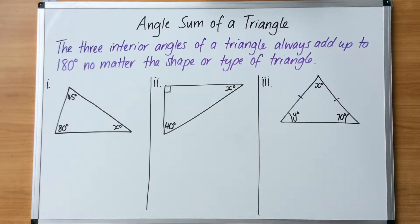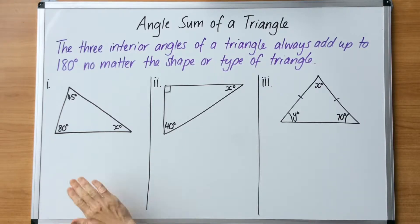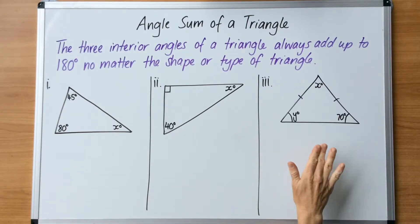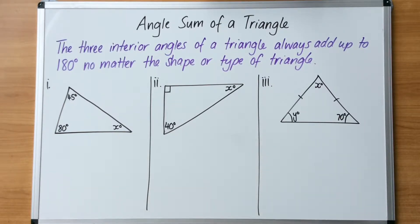In this video, we are going to focus on angle sum of a triangle. The three interior angles of a triangle always add up to 180 degrees, no matter the shape or type of triangle. Taking a look at each of these three questions, all of the angles in those triangles will all add up to 180 degrees.